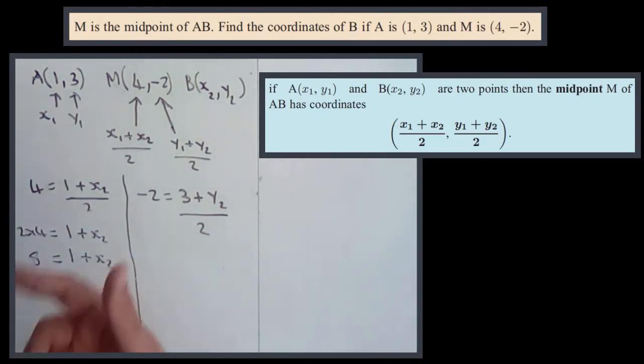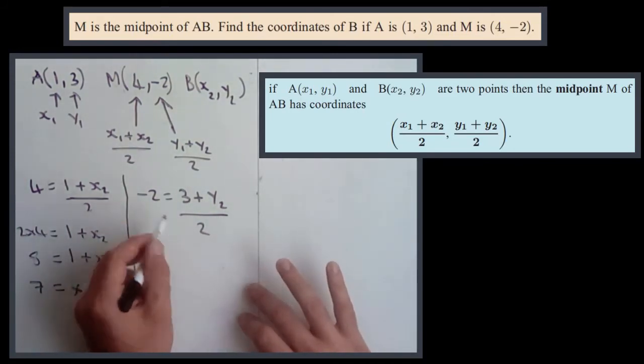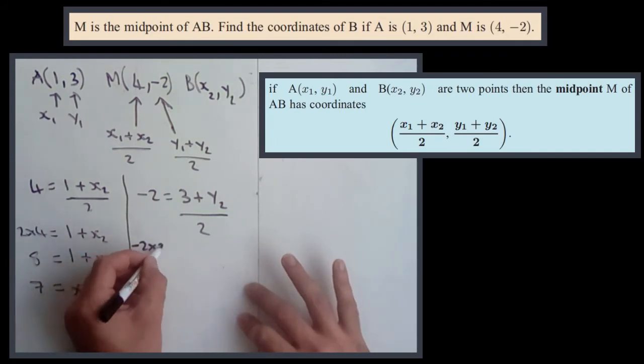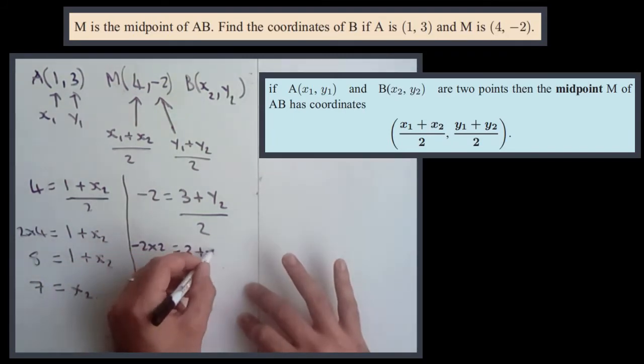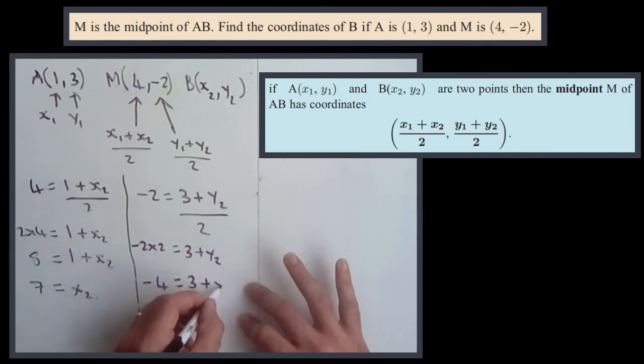Same as the last one. Multiply through by 2. So -2×2 = 3+y2, which gives -4 = 3+y2.